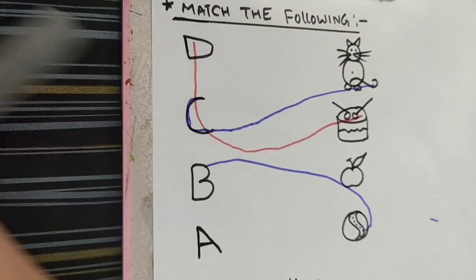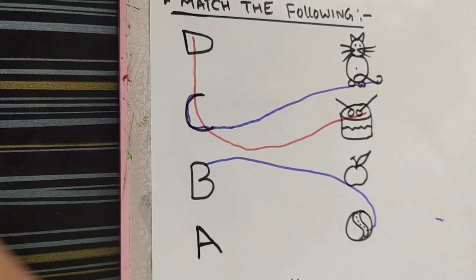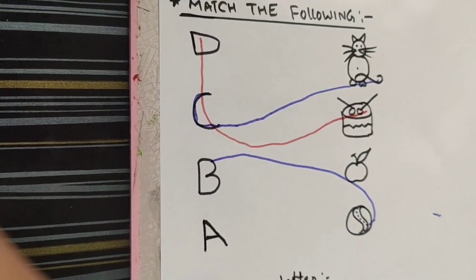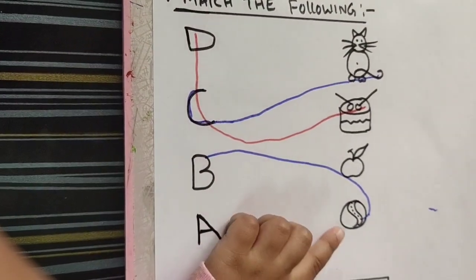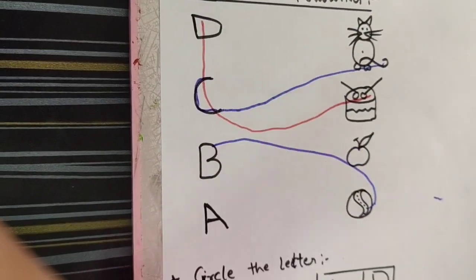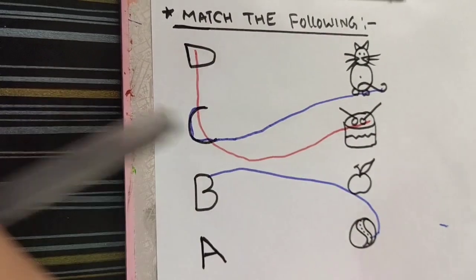Where is apple? Where is apple? Here you are? Here. Apple, here. Yes, very good. Let's match A with apple.